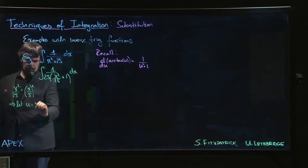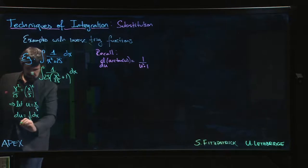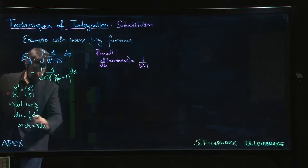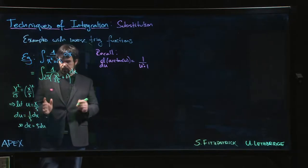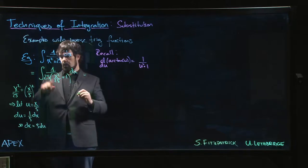And that suggests that we should let u equal x/5, and then du is (1/5)dx. So that means that dx will be 5 times du.